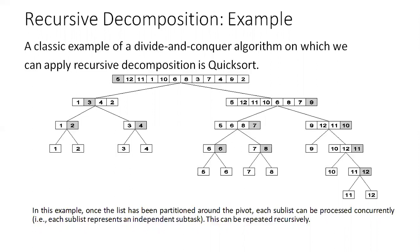The list is divided into two sub-lists. Initially the pivot element is five, and with respect to that pivot element, the left-hand side list and right-hand side list are created. Every time the pivot element in the sub-sequences list is selected and further divided. Once the list has been partitioned around the pivot, each sub-list can be processed concurrently — that is, each sub-list represents an independent sub-task. This can be repeated recursively.